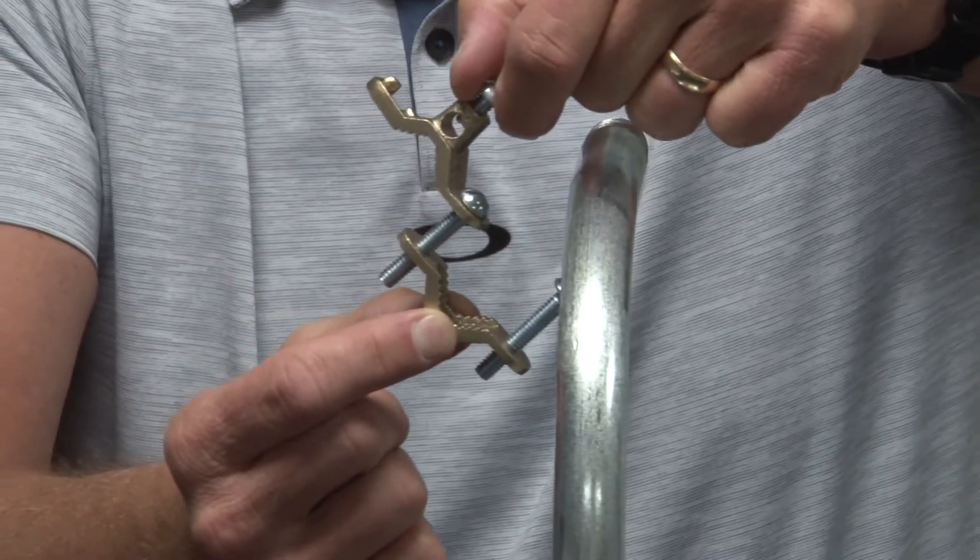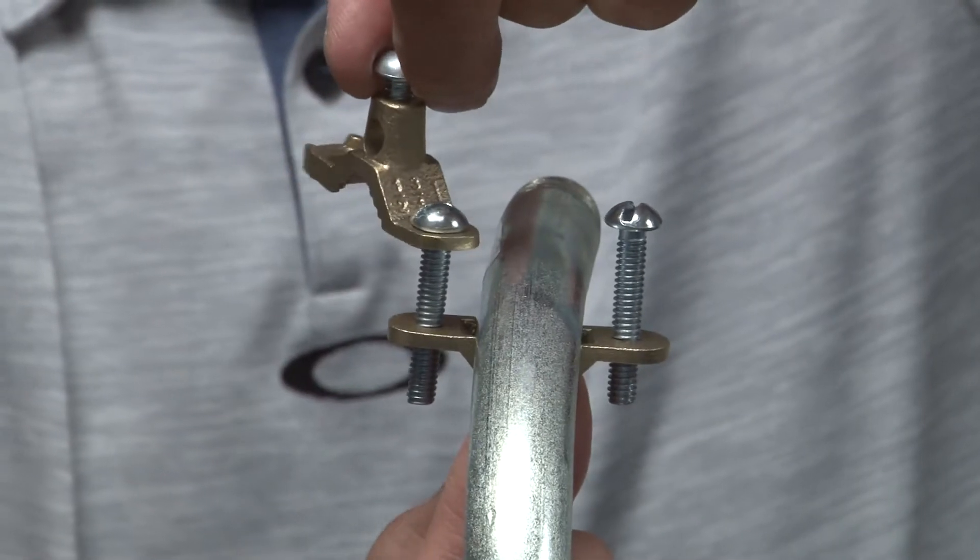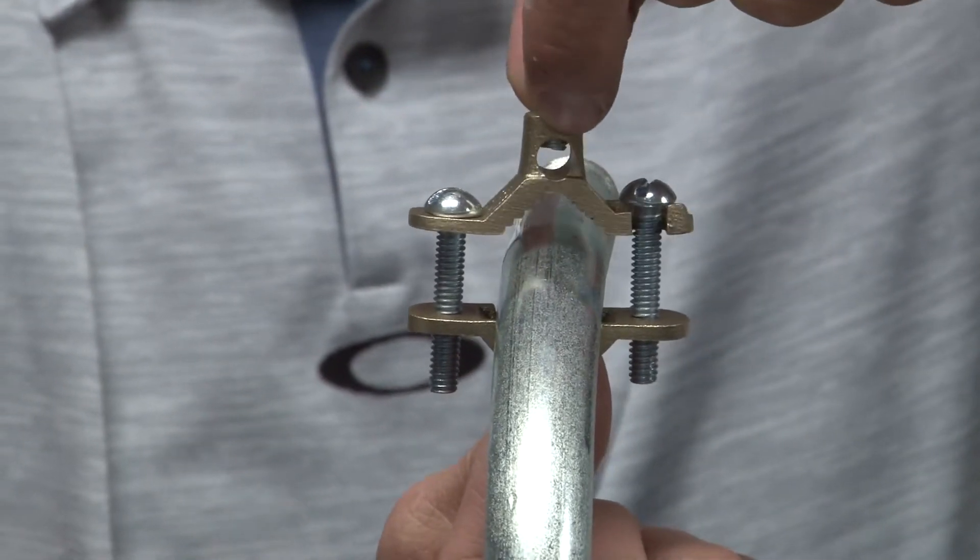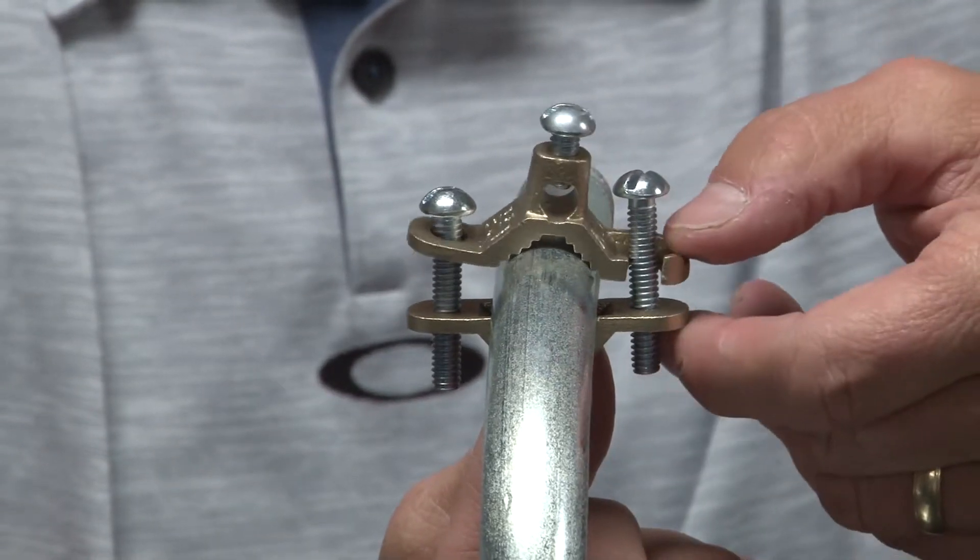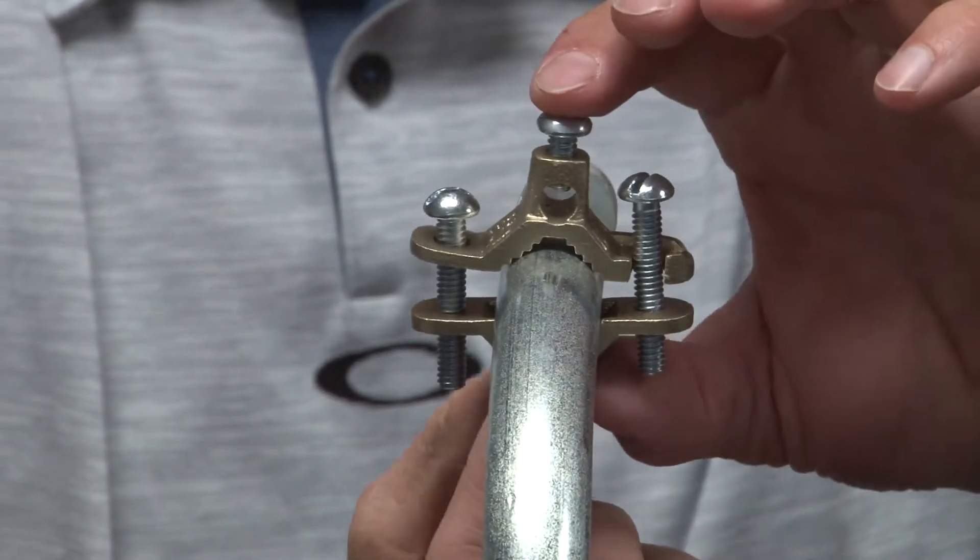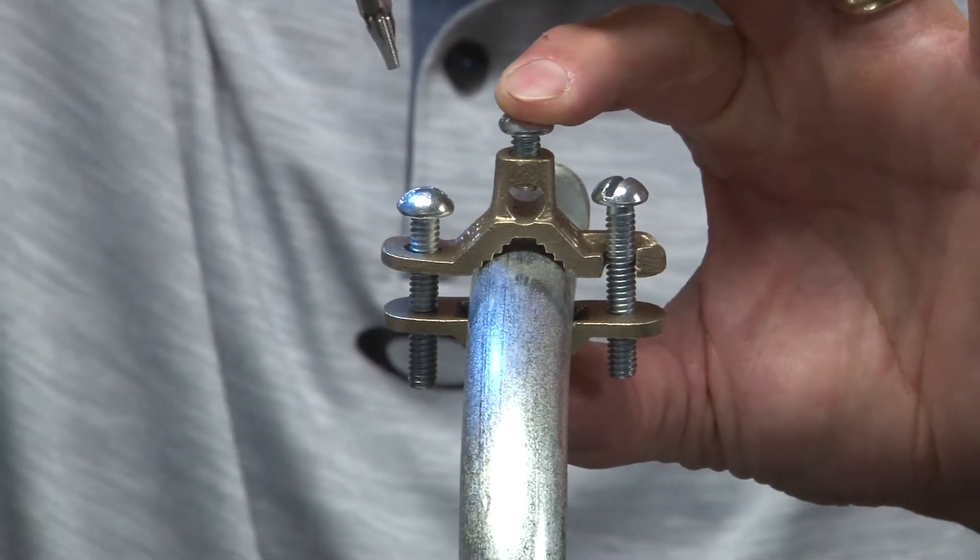This pipe represents the water pipe that I need to ground to. You simply place it directly on the water pipe, close it down, and then by holding the opposite side and taking your screw gun, you can tighten it down.